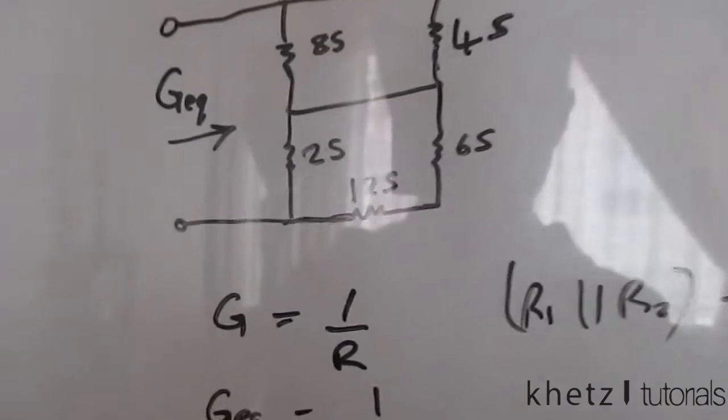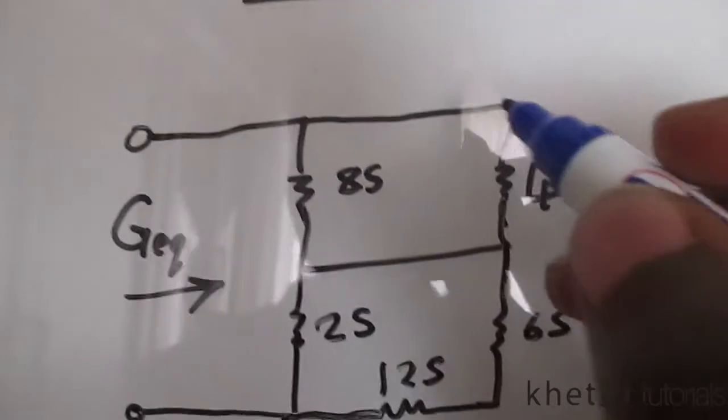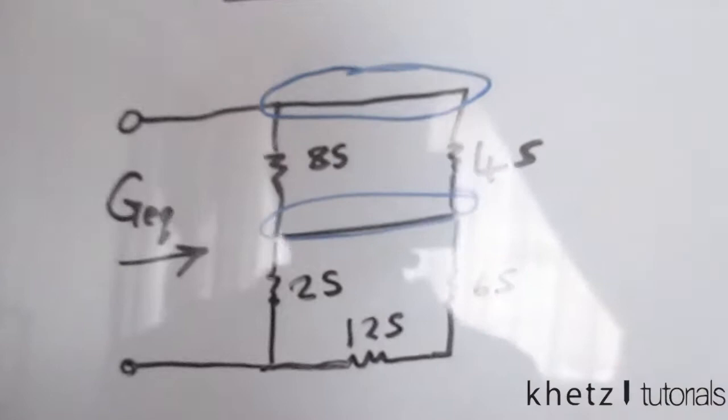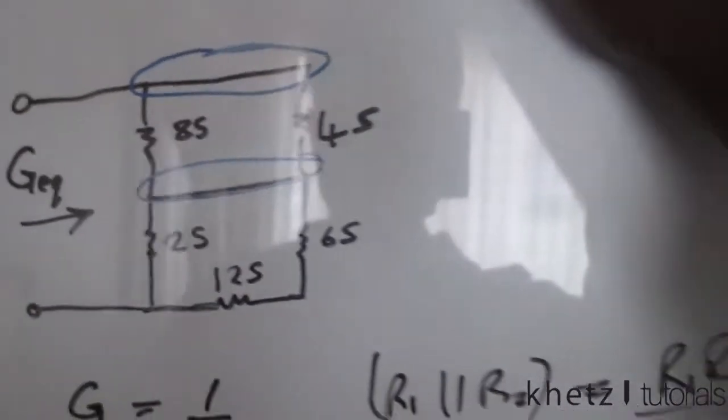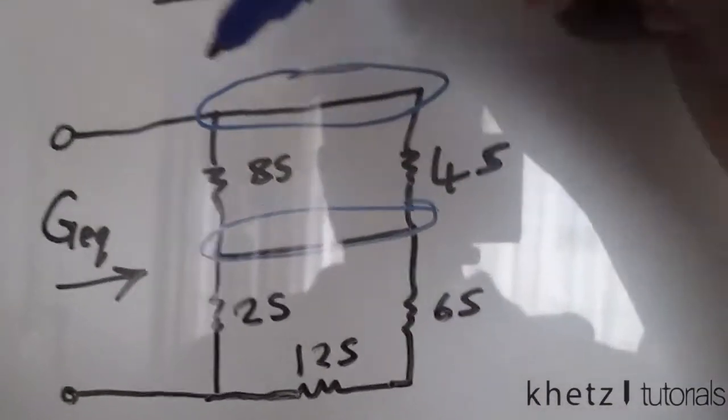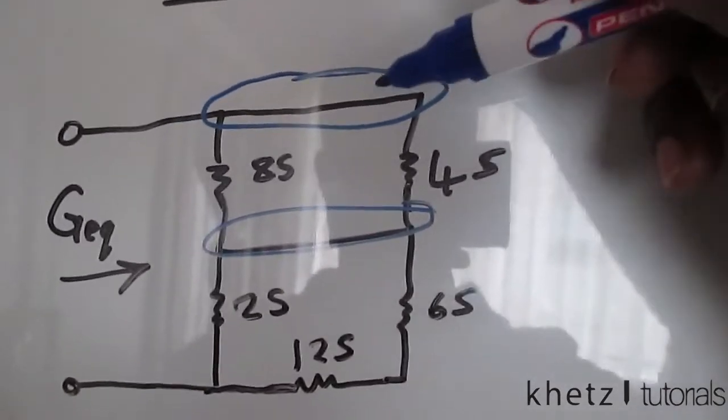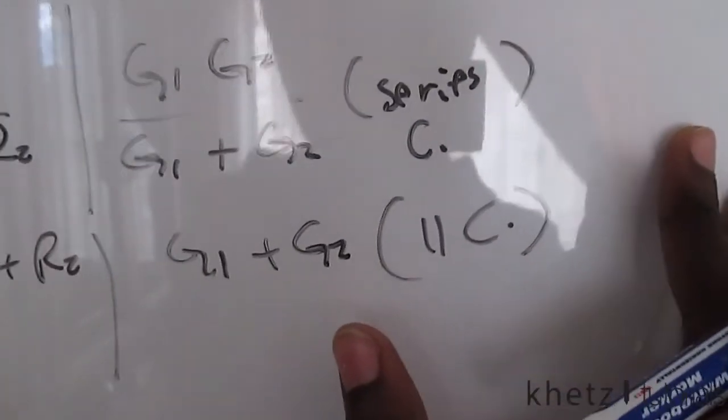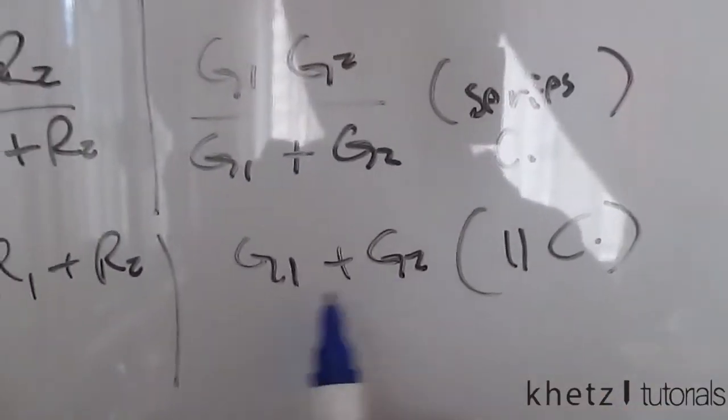I'm just going to switch to new pin. Okay. So we have this node up here and this node down here. So the four Siemens, Siemens, which is the unit for conductance, the four Siemens and the eight Siemens are in parallel. They share two nodes, that node and that node. If we go back here, if we have parallel conductances, we add. So parallel conductances, we add them, G1, G2.